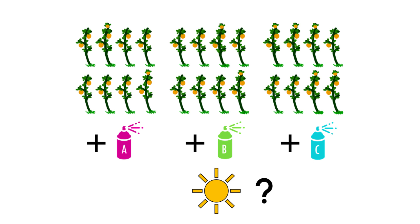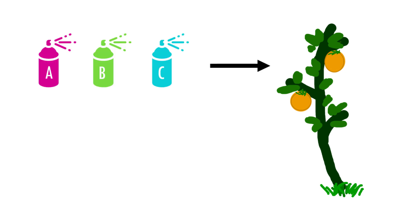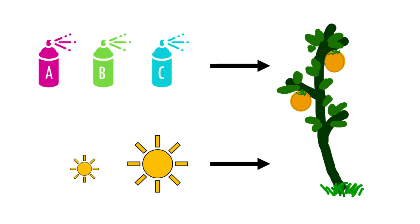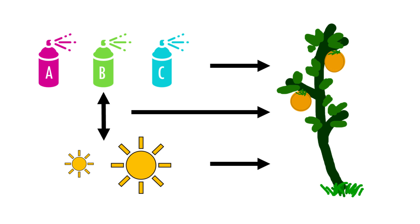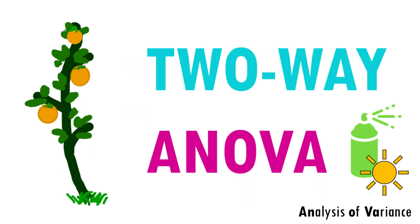So now we have two variables: fertilizer type (A, B, or C) and sunlight level (low or high). The question now is: does fertilizer type, sunlight level, or their combination affect plant height? One-way ANOVA isn't enough here — we need two-way ANOVA. Two-way just means we're testing two factors, and we're testing each factor — fertilizer and sunlight — but also whether their combination has a special effect. Maybe fertilizer A only works in high sun.